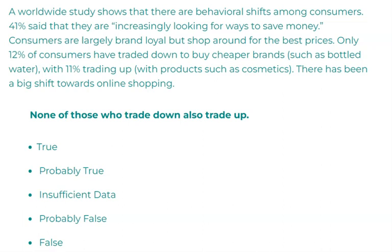The following question is an inference type question, and this means we're going to look at the statement and see how likely it's true given the text above. The statement is as follows: none of those who trade down also trade up.